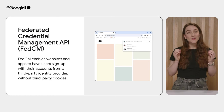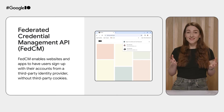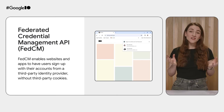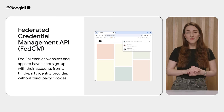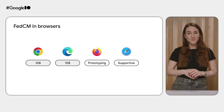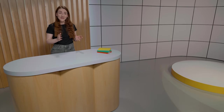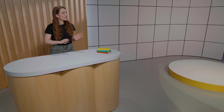FedCM API is a privacy-preserving approach to federated identity. Websites and apps can let users sign up seamlessly and securely with their accounts from a third-party identity provider without third-party cookies. FedCM is available in Chrome and Edge since version 108. Mozilla is prototyping it in Firefox, and Apple and Brave have shown some directional support on this specification as well. Federated identity solutions are not the only ones affected — if your website has a sign-in flow that relies on third-party cookies, you may need to take action as we approach their deprecation.